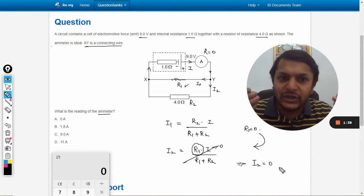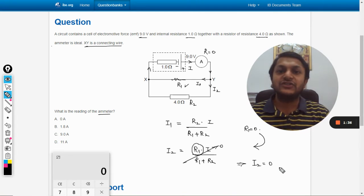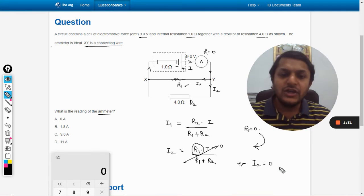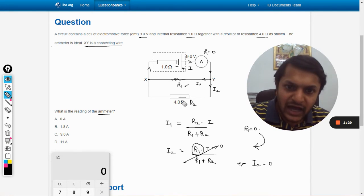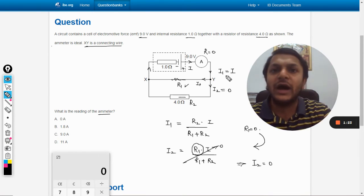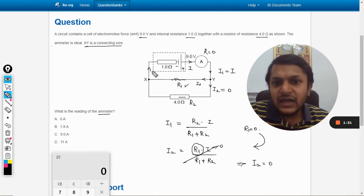So the current in the second branch is going to become zero. If the first branch does not have any resistance, even from the formula we are getting the same thing. So current that is going from 4 ohm will be zero and i1 will be equal to i. So total current will pass through this.